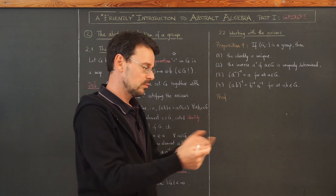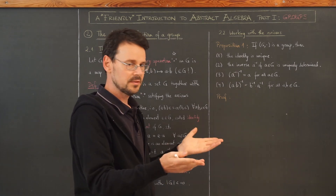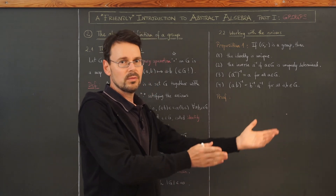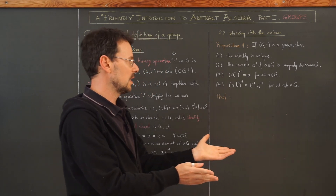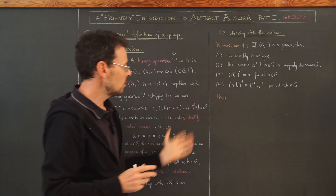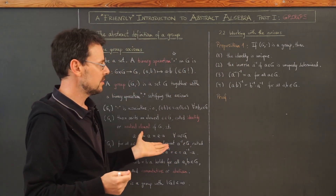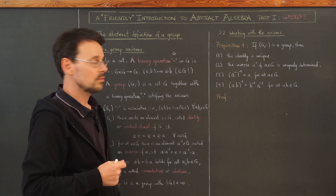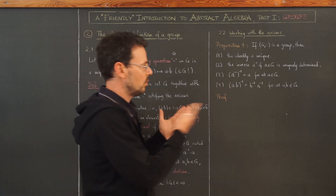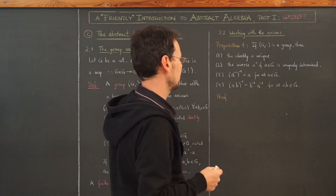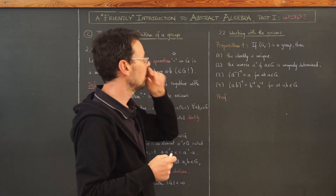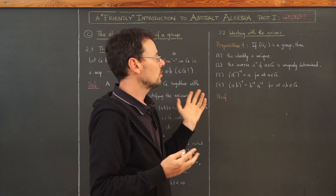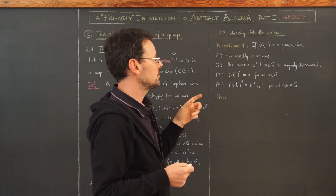If I prove something for a group of symmetries, I can't be sure the same is true for a group of matrices or permutations. But if I prove it using only these three abstract axioms, the statement is true in any group. That's the whole point of what we're doing right now. So we start with some very simple conclusions from these axioms.